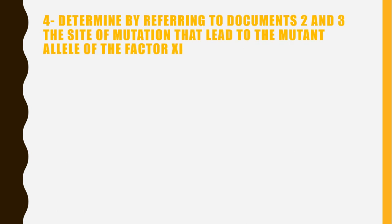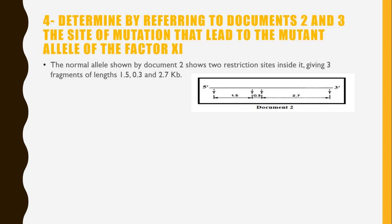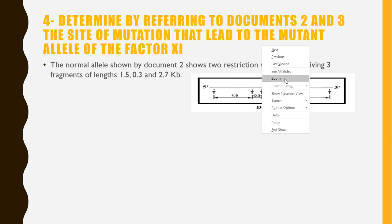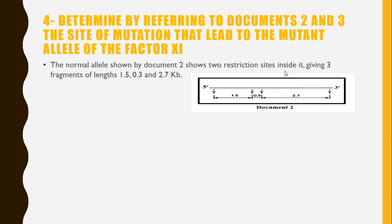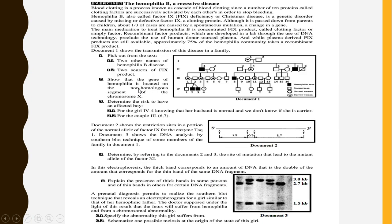For question four, we must determine the site of the mutation that led to the mutant allele of Factor IX, by referring to documents two and three. Document two shows the restriction sites in a portion of the normal allele of Factor IX for the enzyme TaqI. Document three shows the DNA analysis by Southern blot technique of some members of the family from the pedigree.